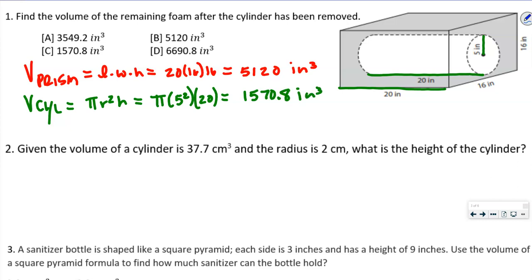We're going to subtract these because we want to know just the gray part — taking the cylinder out of the prism. So that's going to be 3549.2 inches cubed.